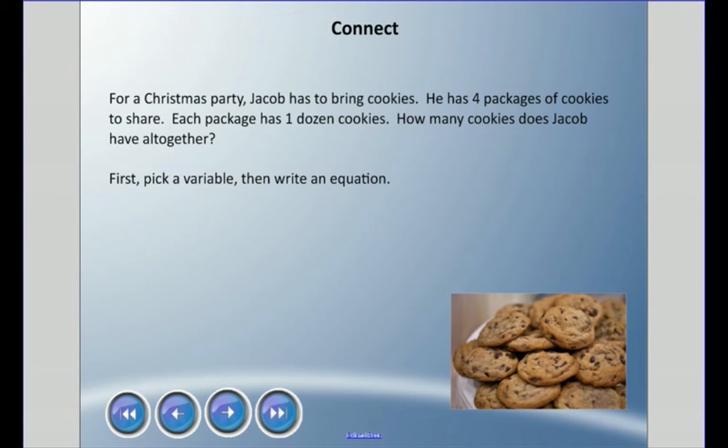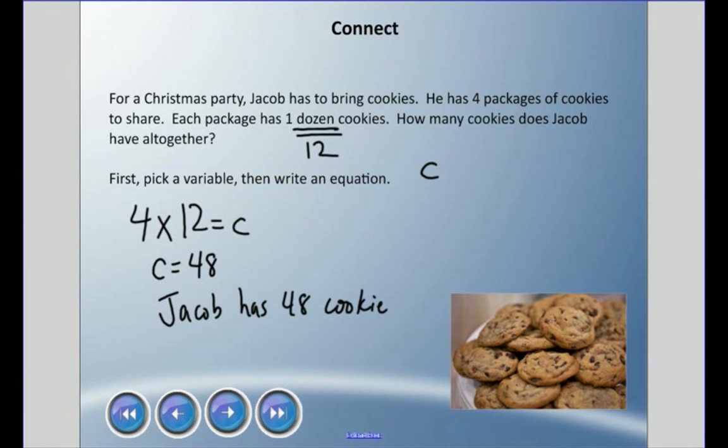For a Christmas party, Jacob had to bring cookies. He has four packages of cookies to share. Each package has one dozen cookies. How many cookies does Jacob have all together? First, we need to pick a variable and then write an equation. Maybe we could use C for cookie. One other thing is we need to know what this word 'dozen' means, and that word means 12. So he has four packages of cookies and each one has a dozen. I'm gonna say that equals my C. Knowing my multiplication facts, 4 times 12 equals 48, so C equals 48. Jacob has 48 cookies.